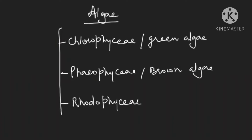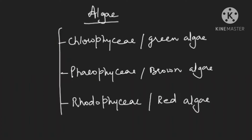These are the three classes of algae, and now we will study a comparative account for them so that it will be very easy for you to study. Let us see the comparative account of all three algae. First of all we will study with respect to habitat — where they are found.